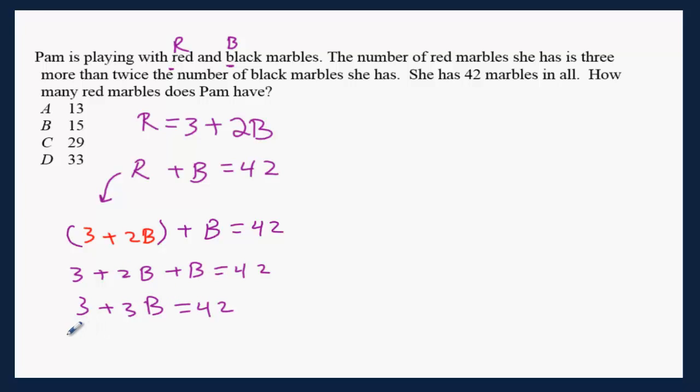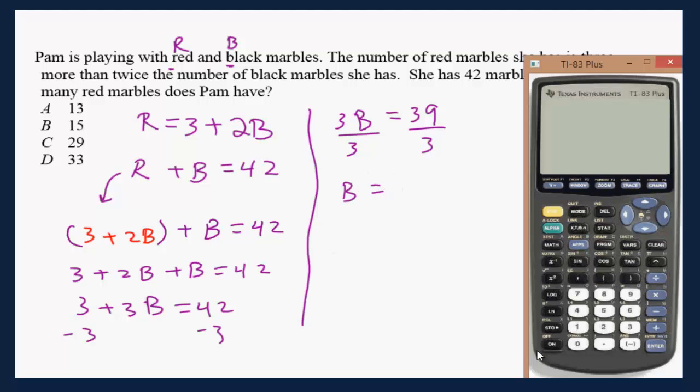Subtract 3 from both sides. You will have 3B equals 42 minus 3, which is 39. Divide by 3, and you get B equals 39 divided by 3, which equals 13. I'm going to confirm this.